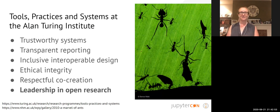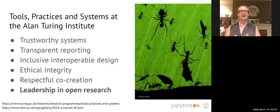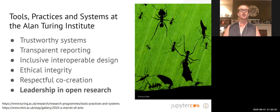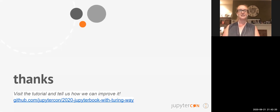I have this image here of ants because I'm always inspired by how by working together the ants can create something emergent — something that is greater than the sum of its parts. I'm so glad that each of you are here to join the Turing Way community, the Jupyter Book community and the JupyterCon community because I know we all are following these values as best we can. Thank you, I hope you really enjoy the rest of the tutorial and please let us know if you have any questions along the way.